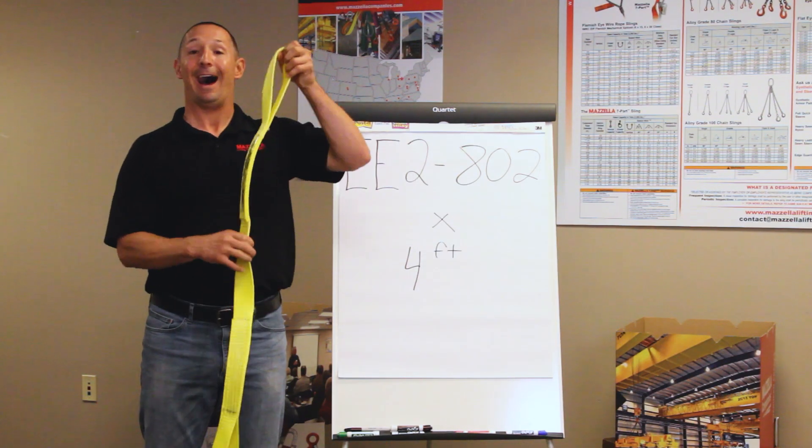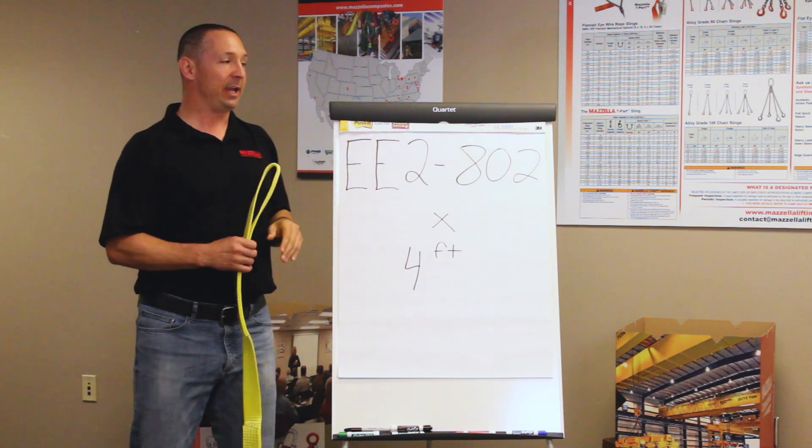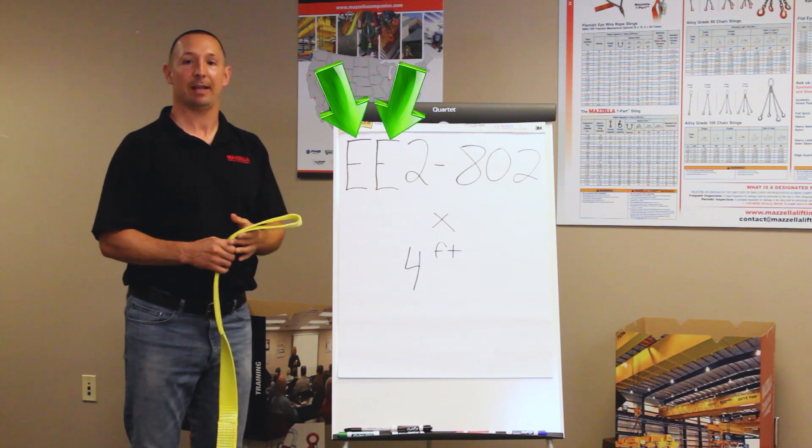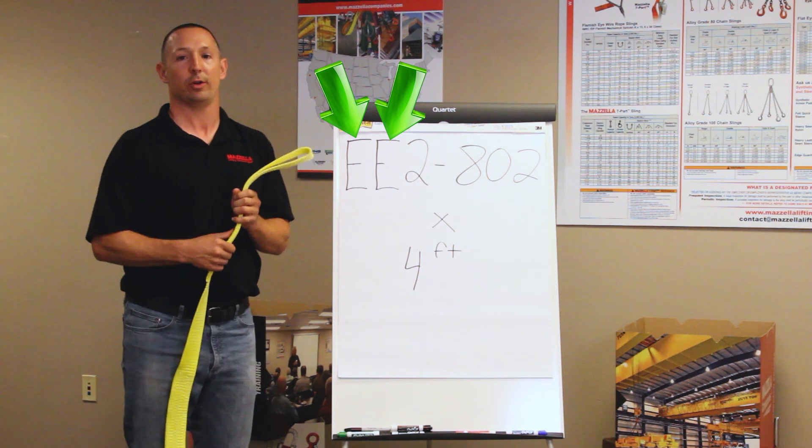Now, it's an I and I sling. Okay, there's an I on each end. So in our verbiage, we're going to start with EE, I and I. So that's going to be the first two letters that you see when you need to order your flat web sling.